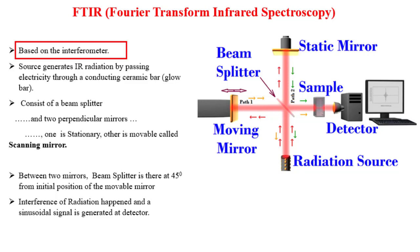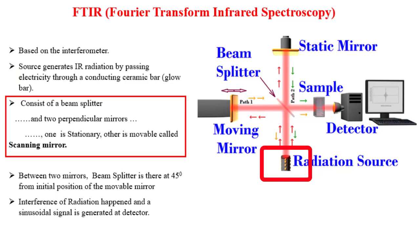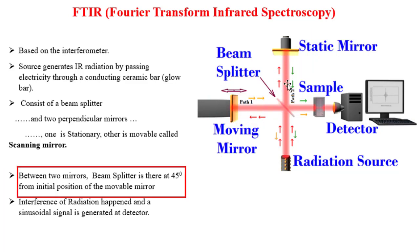FTIR is a method of obtaining infrared spectra by first collecting an interferogram of a sample signal using an interferometer and then performing a Fourier transform on the interferogram to obtain the spectrum, which ultimately gives the indication of the unknown sample. The source generates IR radiation by passing electricity through a conducting ceramic bar. FTIR consists of a beam splitter and two perpendicular mirrors — one is a static mirror and another is a moving mirror, called the scanning mirror. The beam splitter is positioned at 45 degrees from the initial position of the movable mirror, and is a semi-transparent mirror that reflects half of the infrared radiation and passes the remaining half.